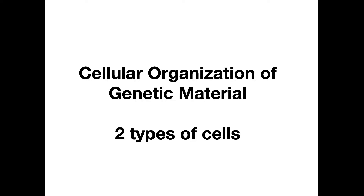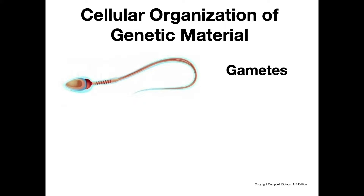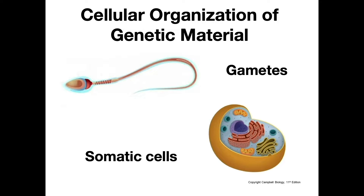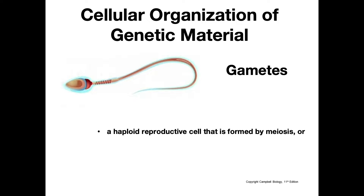When thinking about cells, it's important to remember that in our bodies we have two kinds of cells. The first is our gametes — any haploid reproductive cell formed by meiosis or a descendant of cells formed by meiosis. Haploid means the cell has half the number of chromosomes as a somatic cell. This includes sperm and eggs — anything involved in reproduction is a gamete.